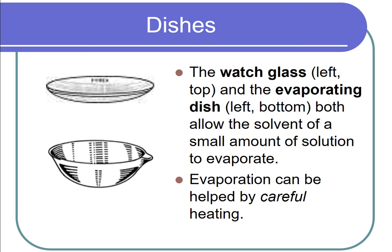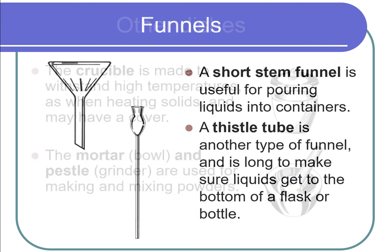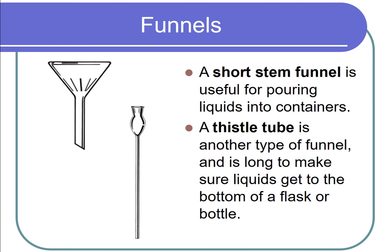Evaporation can be helped by careful heating. The crucible is made to withstand high temperatures, as when heating solids, and may have a cover. The mortar and pestle are used for making and mixing powders.